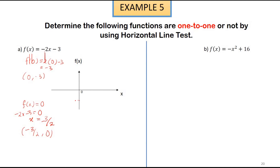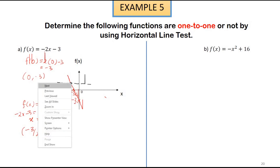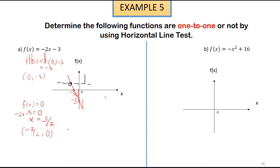So we have two points: (0, -3) and (-3/2, 0). We connect the two points to get the graph. Now applying the horizontal line test, you can see that the horizontal line cuts the graph at only one point. Therefore, f(x) = -2x - 3 is a one-to-one function.